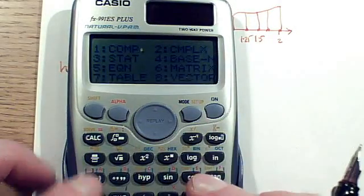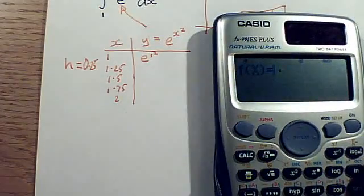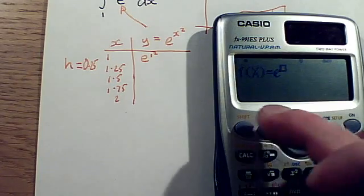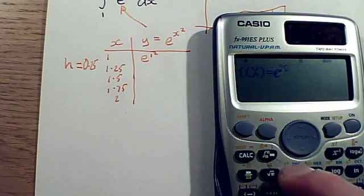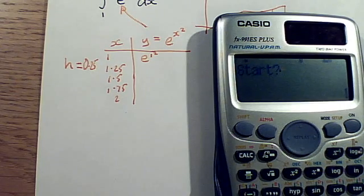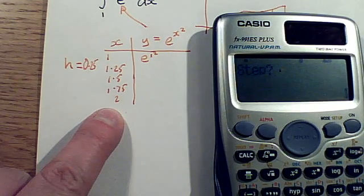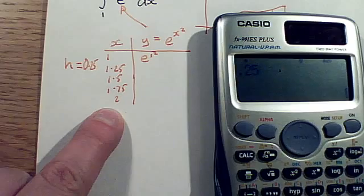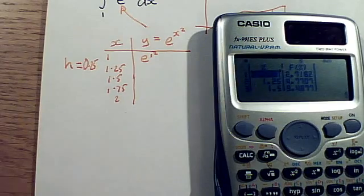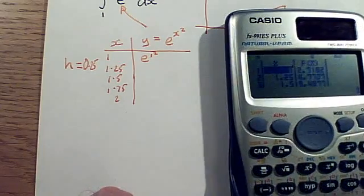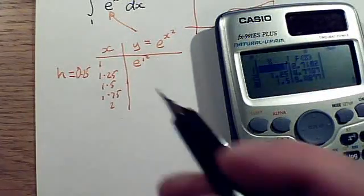So if I go into mode table, then the function I'm working out values of is e to the power x squared. And I want it starting with x equals 1, ending when x is 2, and with a step size of 0.25. And it goes straight to the table. And it is showing me five significant figures in each of these. So I can just copy those values into the table.